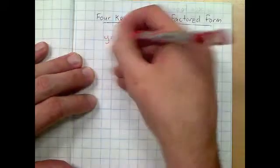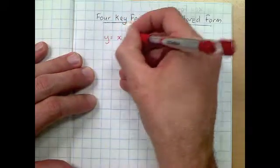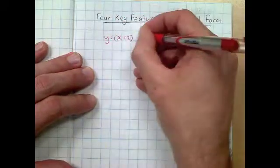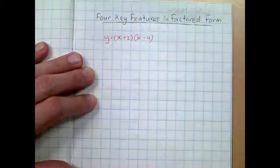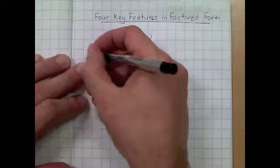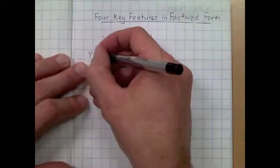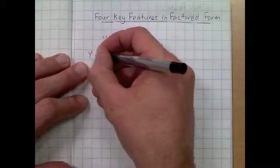We're going to look at the four key features of a quadratic function in factored form. So we've got y equals x plus 2 in brackets and x take 4.